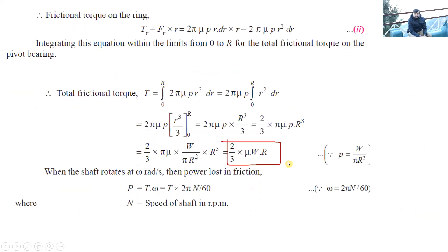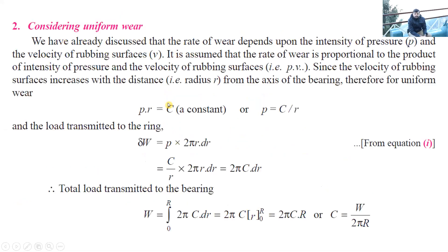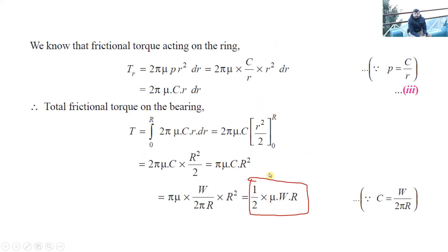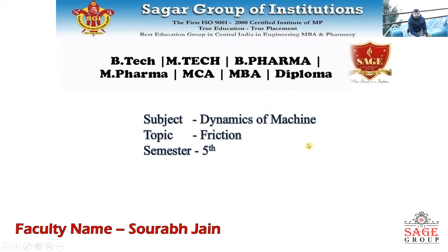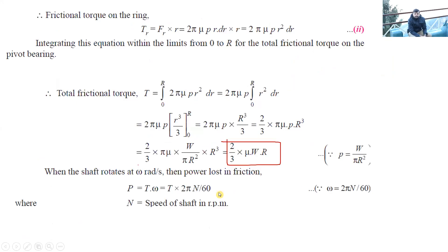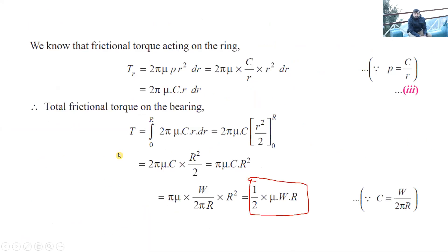Comparing the two theories: in uniform pressure theory, the frictional torque is T = (2/3)·μ·W·R, while in uniform wear theory, T = (1/2)·μ·W·R. The only difference is the constant multiplier — 2/3 for uniform pressure theory and 1/2 for uniform wear theory. I hope this derivation is clear.